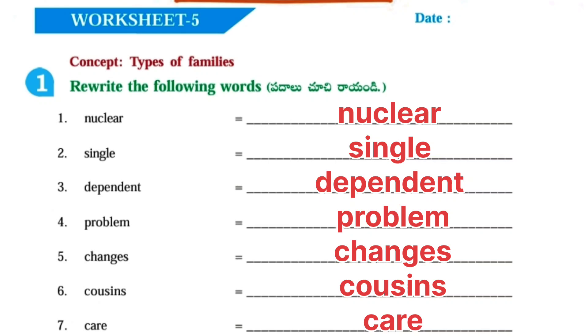Worksheet No. 5 — First one, rewrite the following words. There are some words you have to write as they are.